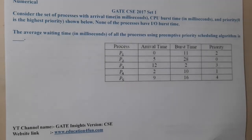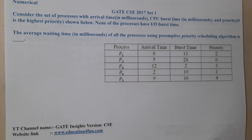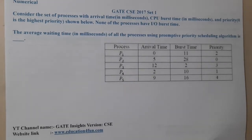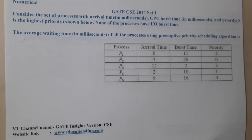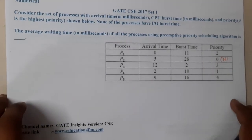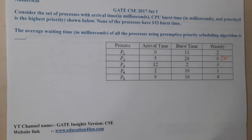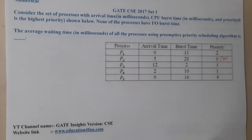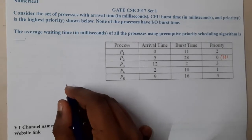Hello guys, we are back with our next lecture. This question belongs to GATE CSE 2017 Set 1. The given question asks us to consider a set of processes with arrival time, CPU burst time, and priority given, where zero is the highest priority. None of the processes have IO burst. They are asking about average waiting time using a preemptive scheduling algorithm.